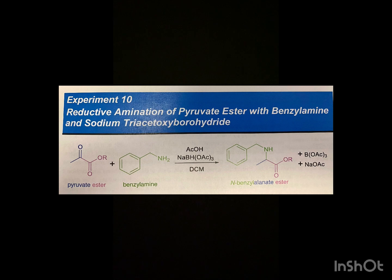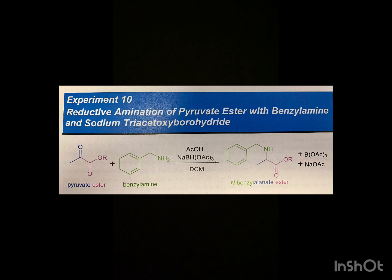Methyl and ethyl pyruvate are alpha-keto esters. Benzyl amine will act as a nucleophile and attack the more electrophilic ketone group over the ester group. After three subsequent proton transfers, the iminium ion that forms is not isolated, but is rapidly reduced with sodium triacetoxyborohydride. The use of acetic acid catalyzes the reaction by facilitating proton transfer.